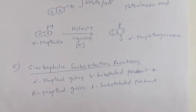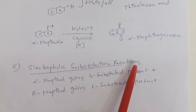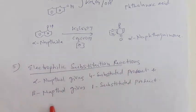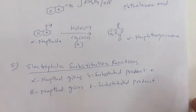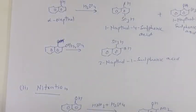Naphthol also undergoes electrophilic substitution reactions. Alpha naphthol gives a four-substituted product and beta naphthol gives a one-substituted product, because we know that the OH group is an ortho-para directing group.